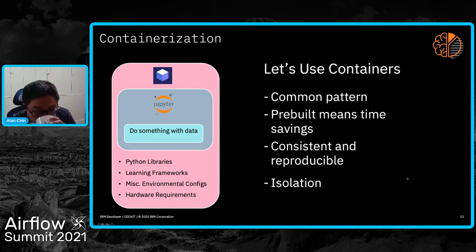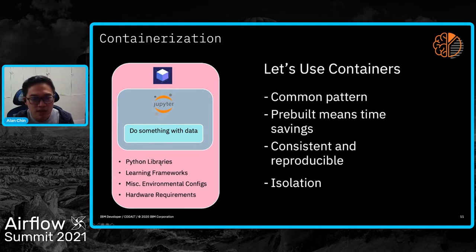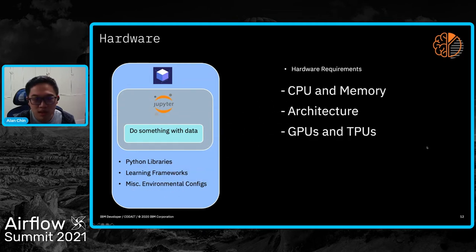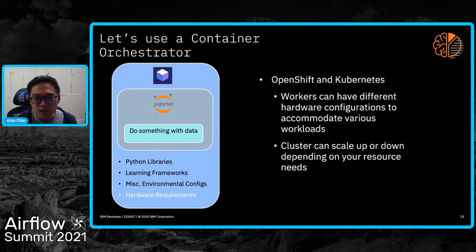You can pull containers from places like Docker Hub or a container registry, or in a more secure environment, a private registry, or you can build the image yourself. Hardware requirements when using containers come in the form of CPU and memory, architecture, GPUs and TPUs. Containers help with libraries and frameworks like CUDA drivers and neural network libraries baked into the image itself. But hardware requirements are still hardware requirements — some nodes need more, some need less.